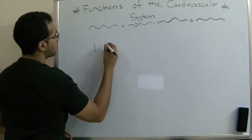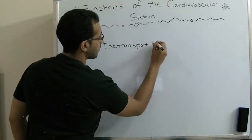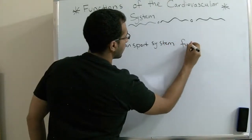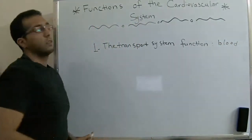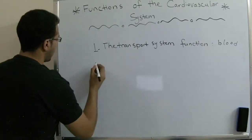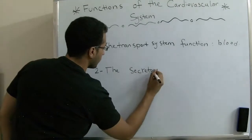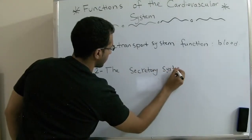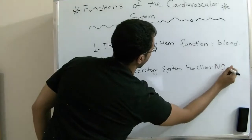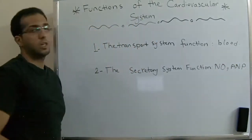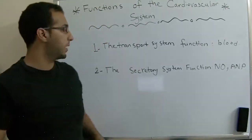The first one we're going to talk about is the transport system function, which is mainly carried out by the blood. The second system we're going to talk about is the security system function. For this video we're going to talk about the transport system function, and for the next video we're going to explain the secretory system function.